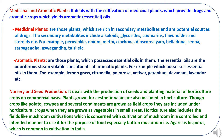Medicinal plants are those plants which are rich in secondary metabolites and are potential sources of drugs. The secondary metabolites include alkaloids, glycosides, coumarins, flavonoids and steroids. Aromatic plants are those plants which possess essential oils in them. The essential oils are the odoriferous volatile constituents of aromatic plants — for example lemongrass, citronella, palmarosa, vetiver, geranium etc.